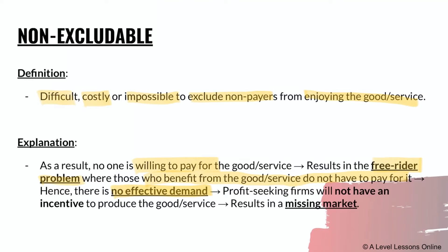Because no one is willing to pay, there is no effective demand, so profit-seeking firms will have no incentive to produce this good or service. With no demand acting as a signal, there will be no supply either, since producers gain nothing from it. This results in what's called a missing market, whereby the good or service is completely absent from the market — which is why the government usually steps in to produce it through taxpayer money or other funding.